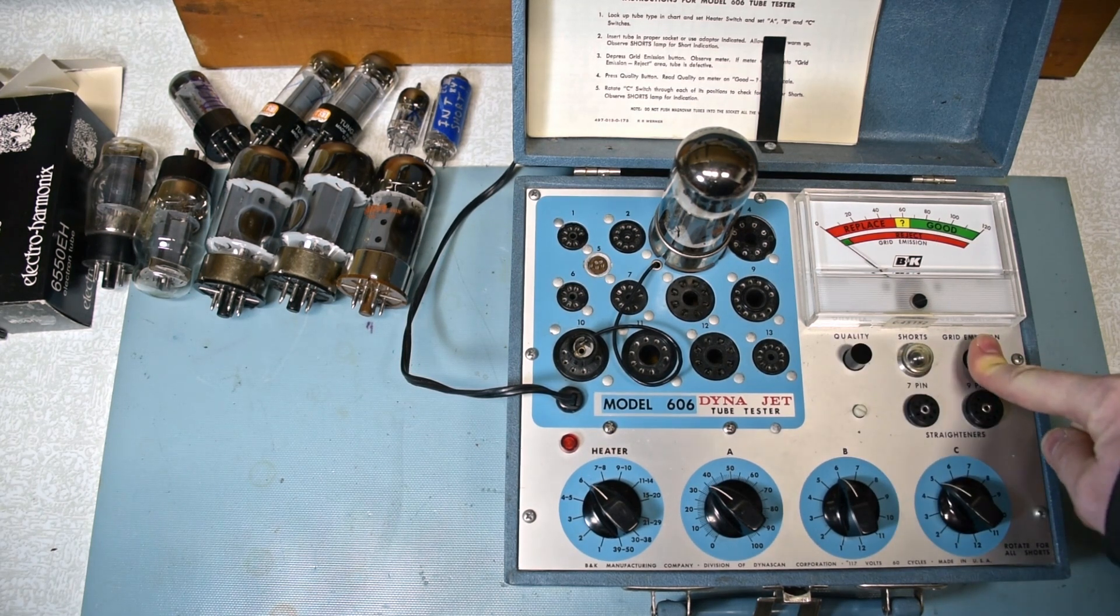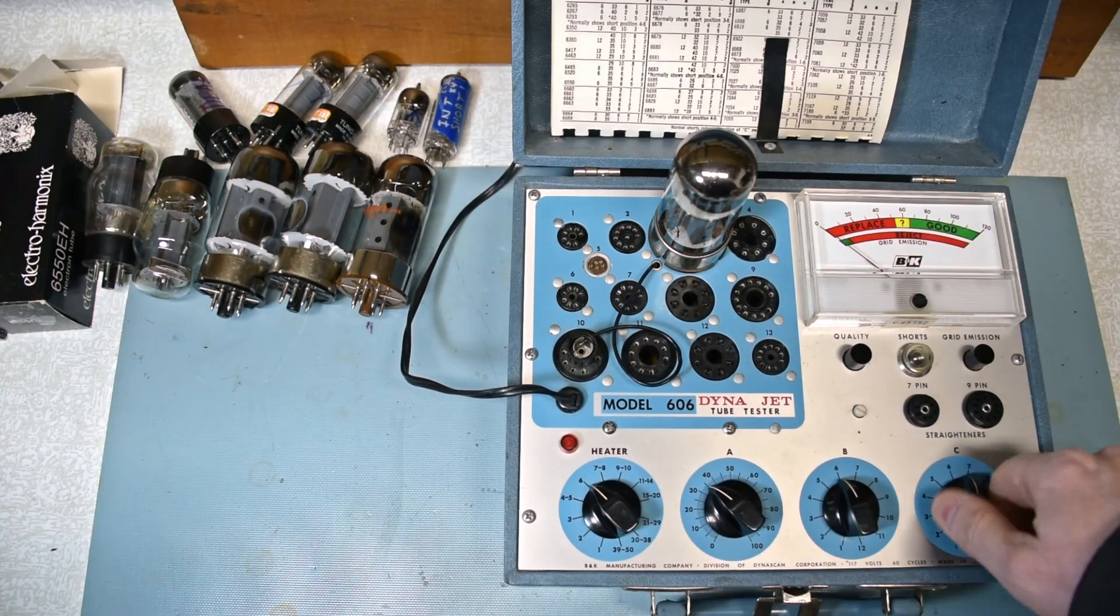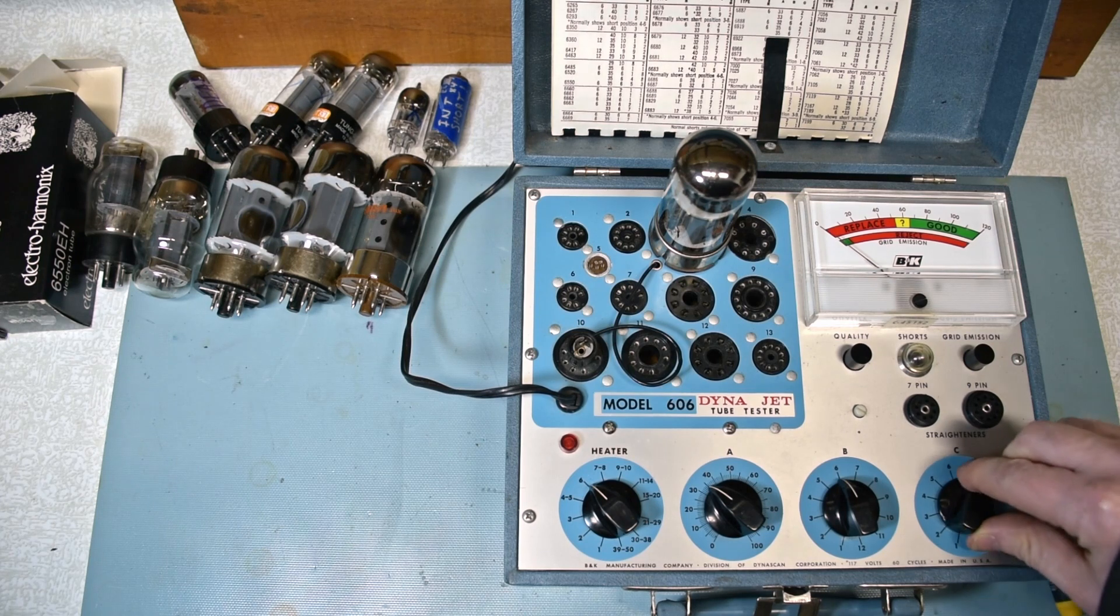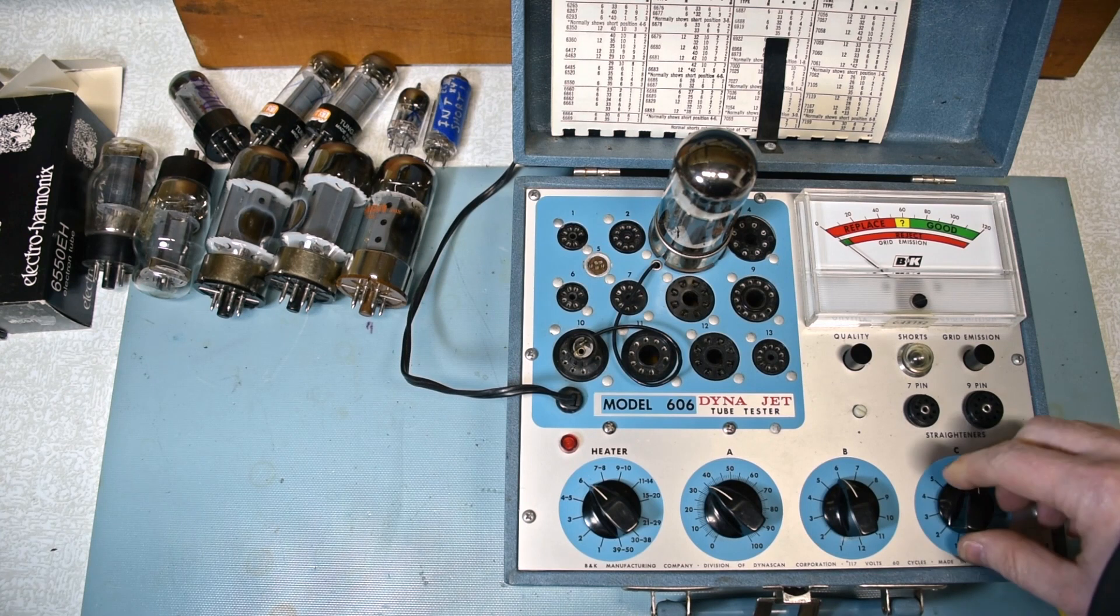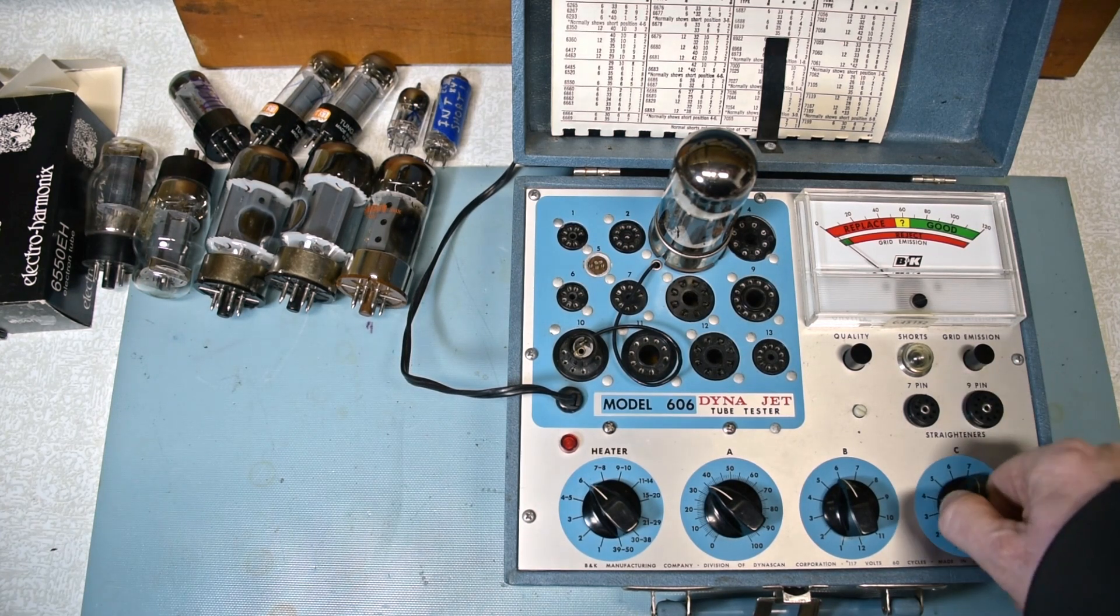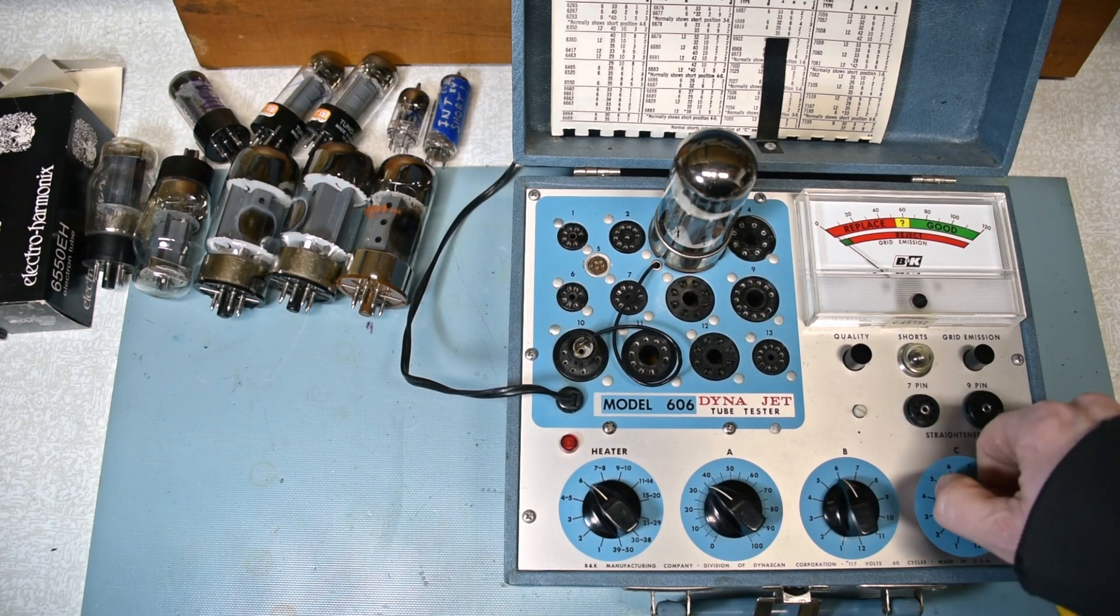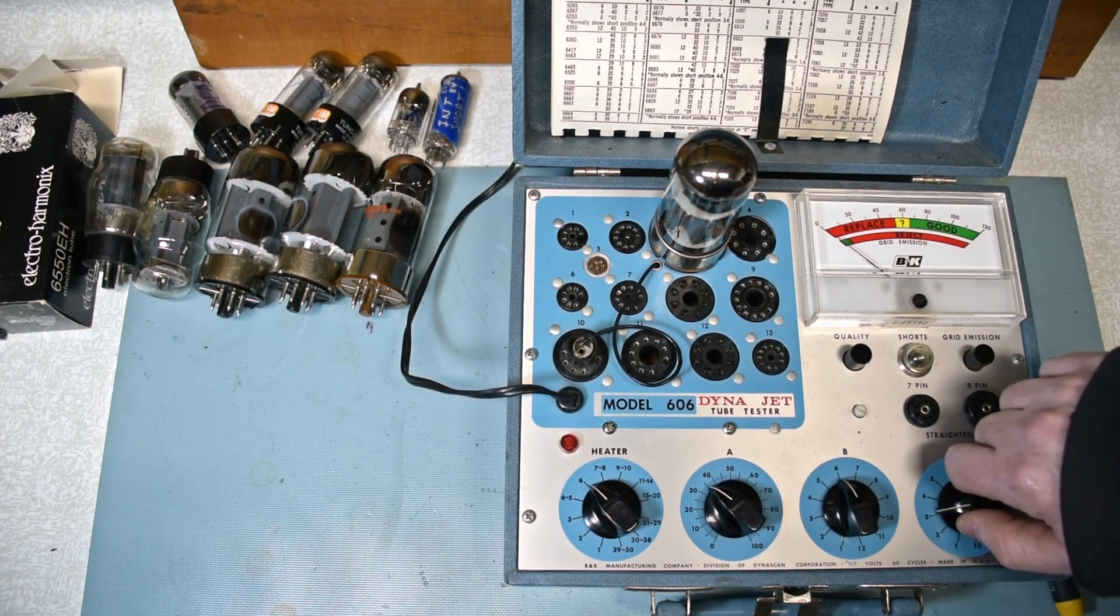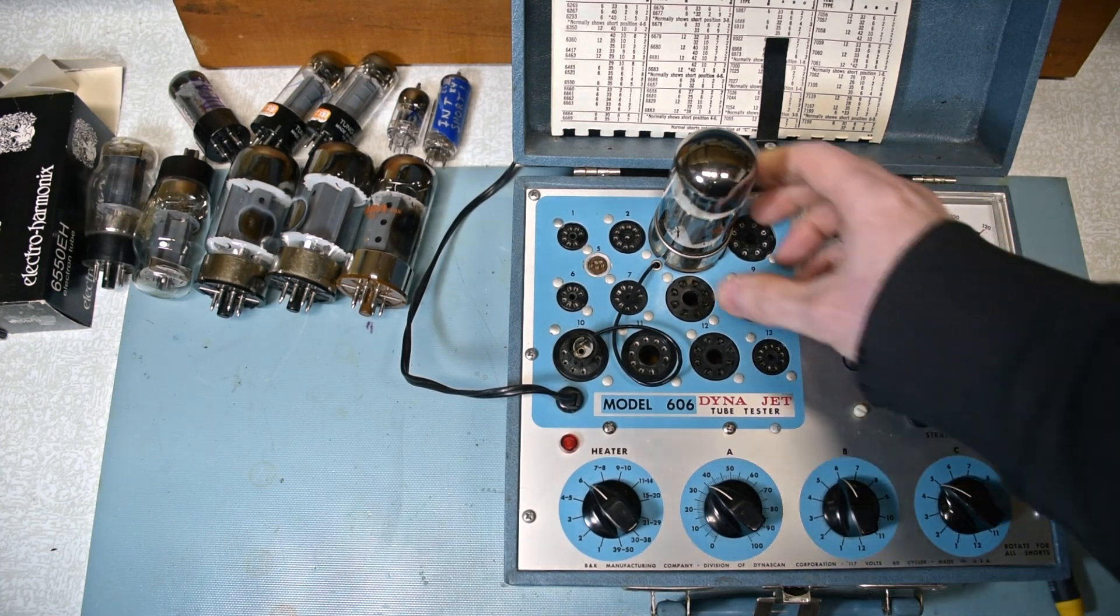I'll check grid emission. Nothing. So basically rotate here and watch this lamp. There will be cases like here it's just blinking slightly as I switch. But in between from one position to the next you can ignore that. Basically you're looking for the light to stay on on one of these switch positions. So that tube checks okay.